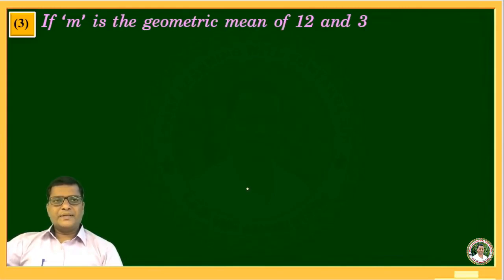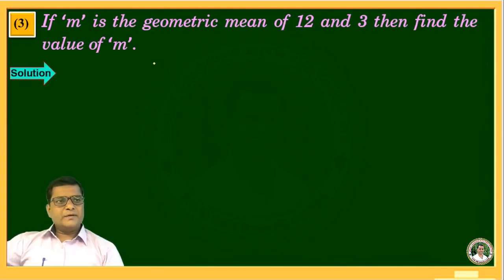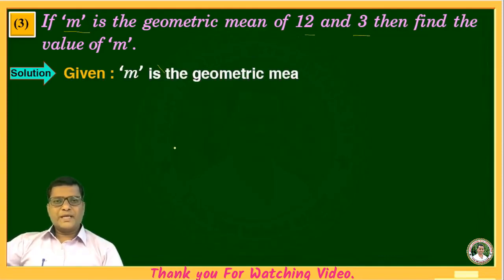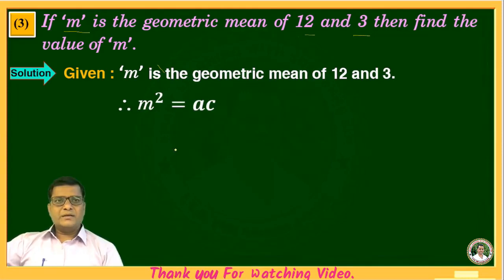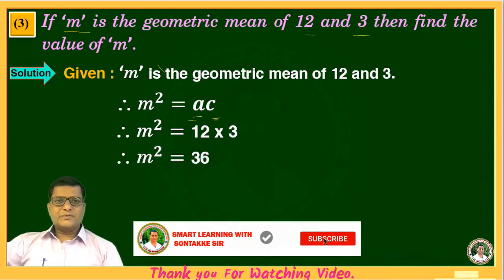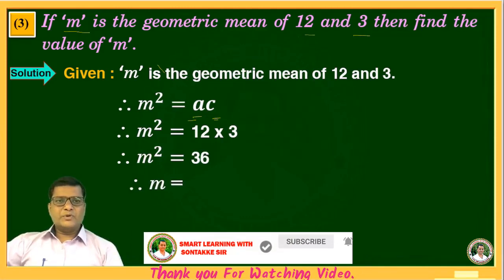The third example of this exercise is: if M is the geometric mean of 12 and 3, then find the value of M. Since M is the geometric mean of 12 and 3, we use the formula M squared is equal to A into C, where A is 12 and C is 3. Substituting the values, M squared is equal to 12 into 3, which gives M squared equal to 36. Taking the square root of both sides, therefore M is equal to 6.